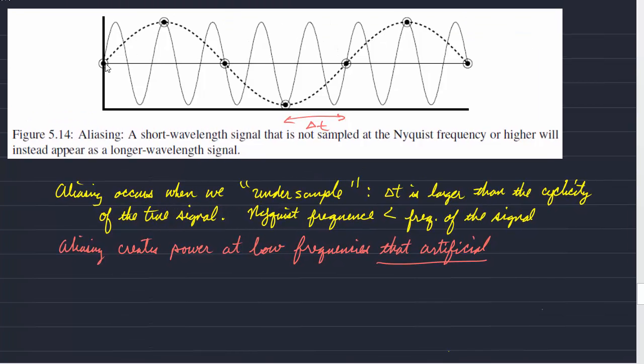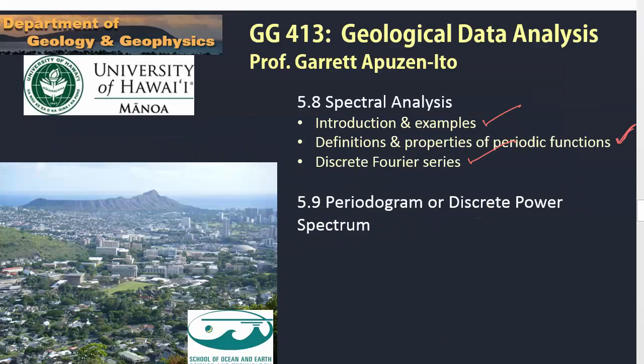And you want to make sure that you sample at a short enough interval such that aliasing is not very strong. Because that aliasing can, because it's artificial, it can map into frequencies that are lower and sort of inhibit the detection of true frequencies at those low frequencies. So, you want to be careful of that. Okay, so I think that wraps up our total discussion of spectral analysis and discrete power spectrums.